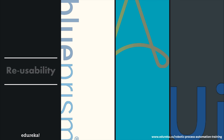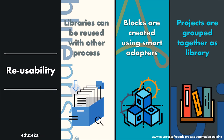Moving on to reusability: all three tools offer various options for reusing processes and designed automations. Blue Prism offers libraries that can be reused with other processes. In Automation Anywhere, blocks are created using smart adapters. In UI Path, projects are grouped together as a library. In short, all three tools offer functionalities to reuse pre-designed automations.